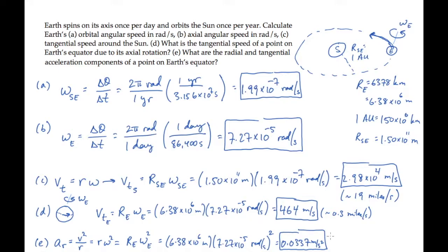The tangential component is r times alpha, where alpha is the angular acceleration. That's approximately 0, so there's approximately no tangential acceleration of a point on the equator.